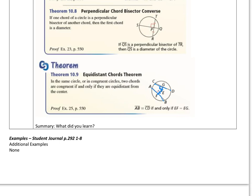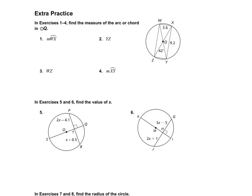And it also works the other way around. If these chords are congruent, then they have the same distance from the center. So kind of a quick lesson today. Let's move on to some of the examples. Let's do the examples in our student journal, page 292, numbers 1 through 8.